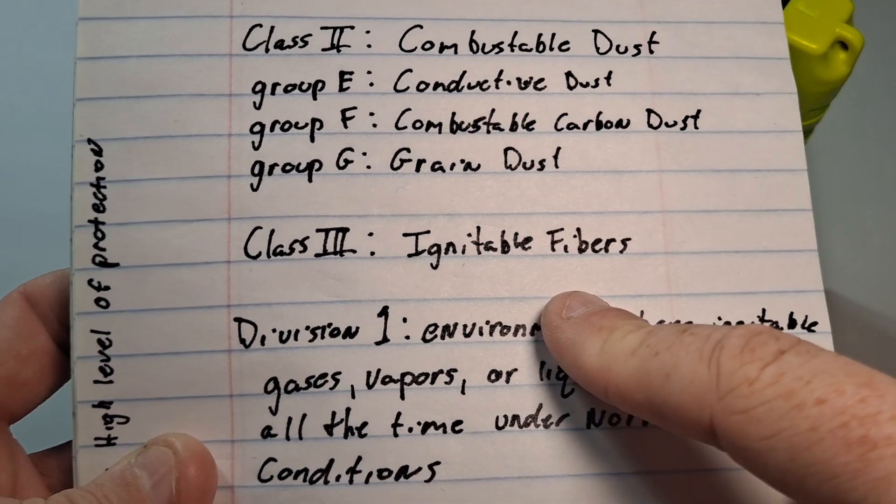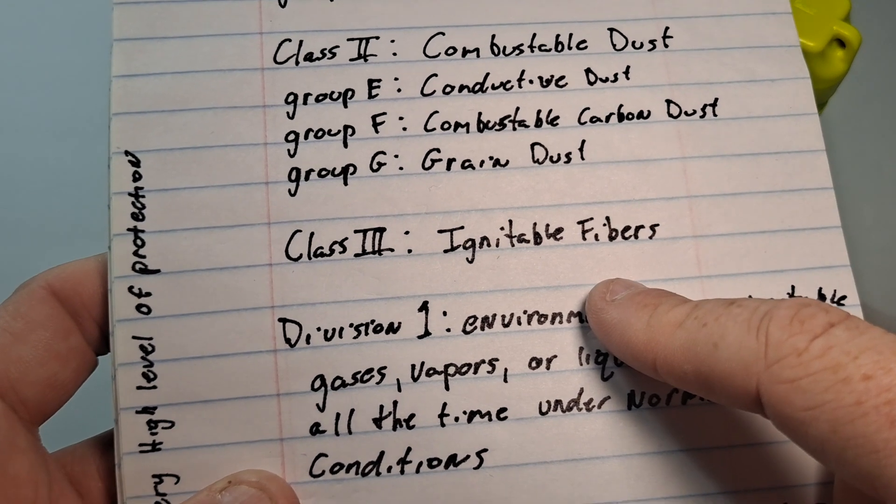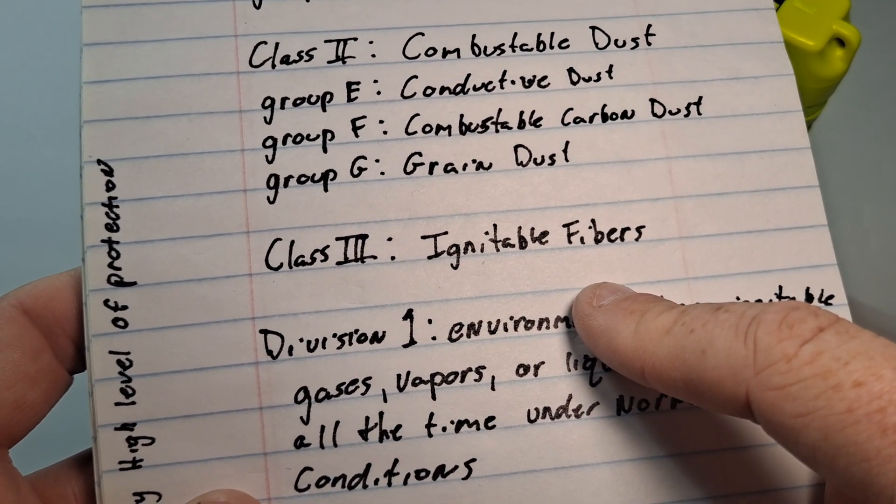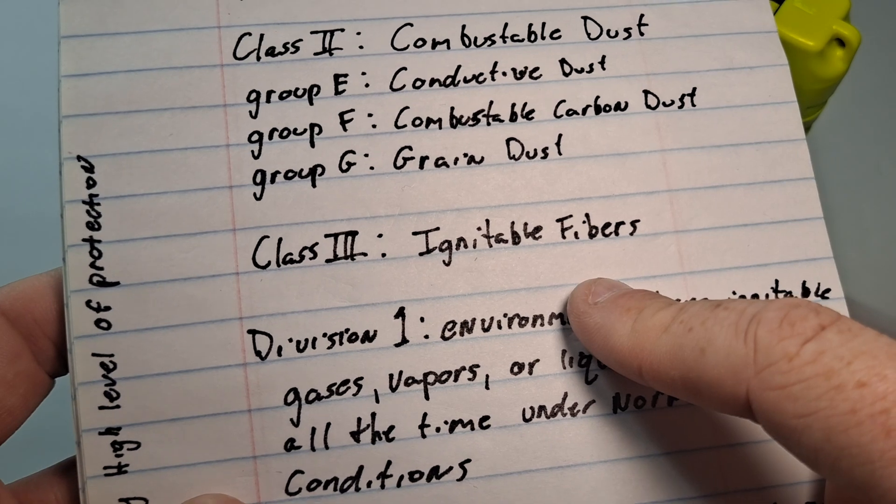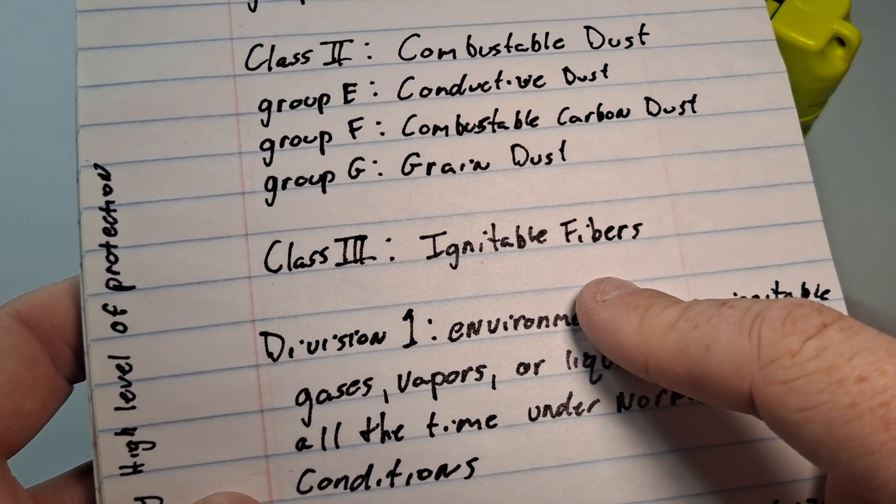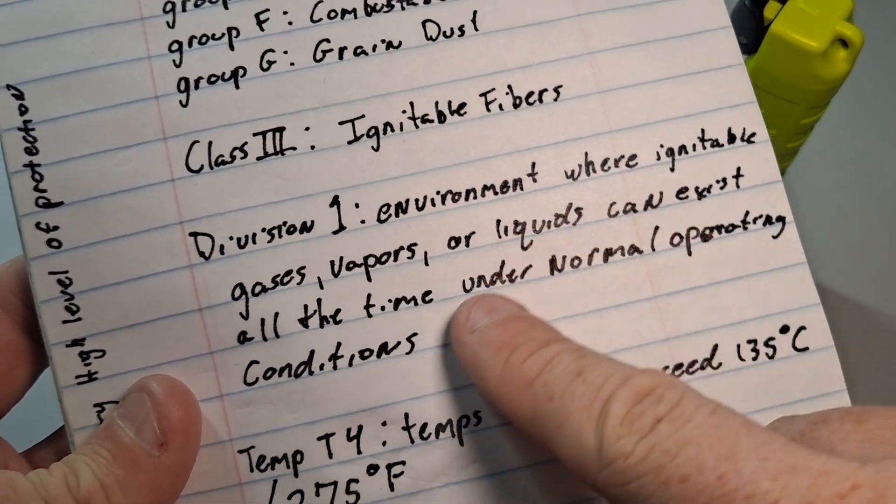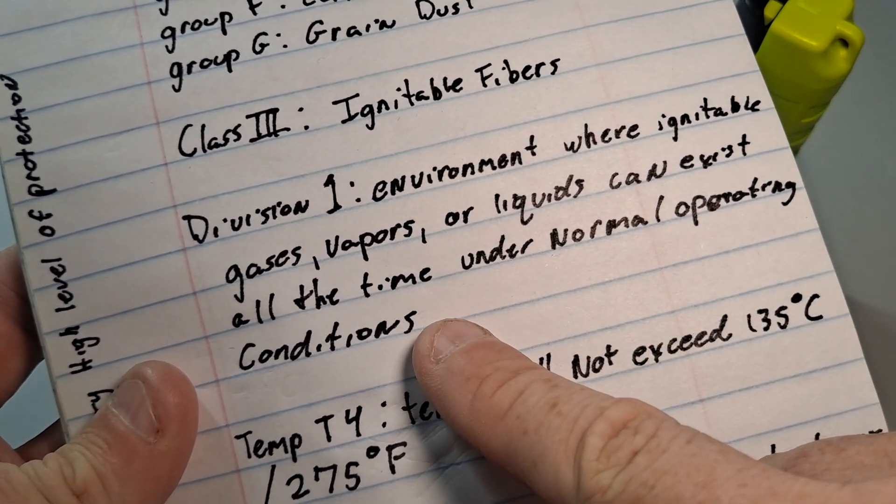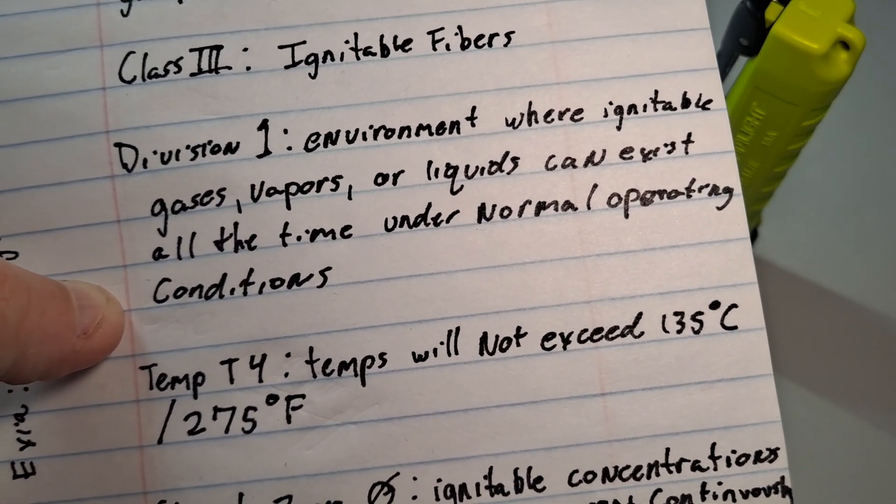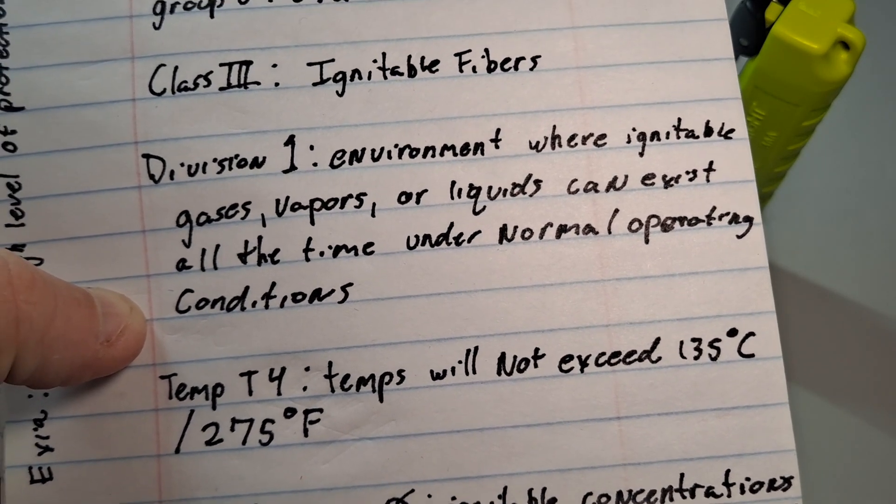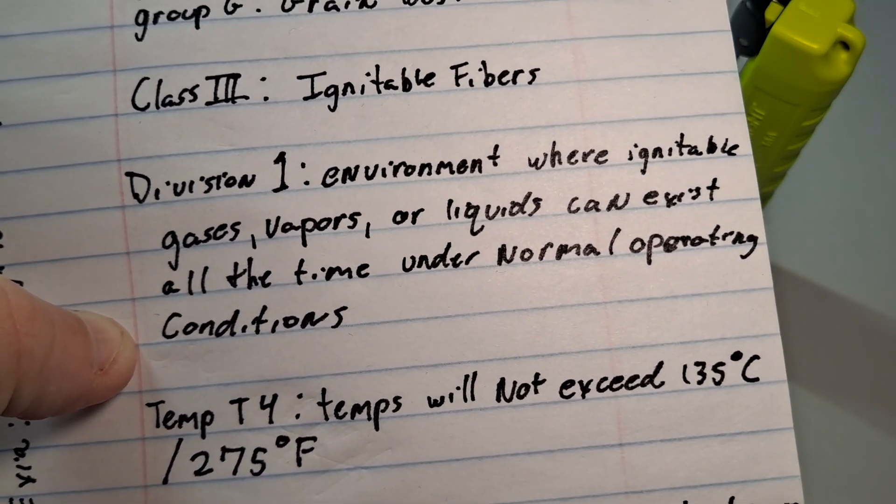Class three ignitable fibers. What's an ignitable fiber? Carbon fiber is an ignitable fiber. Carbon fiber conducts electricity. I can't tell you any amount of people that want carbon fiber battery boxes. I try to talk them out of it. No, no, no, no. I want a carbon fiber battery box. And then it sets their vehicle on fire because carbon fiber conducts electricity. Now division one, an environment where ignitable gases, vapors, or liquids can exist all the time under normal operating conditions. So there is a division two which is an environment where ignitable gases does not exist normally. So this is for use where hazards are normal.